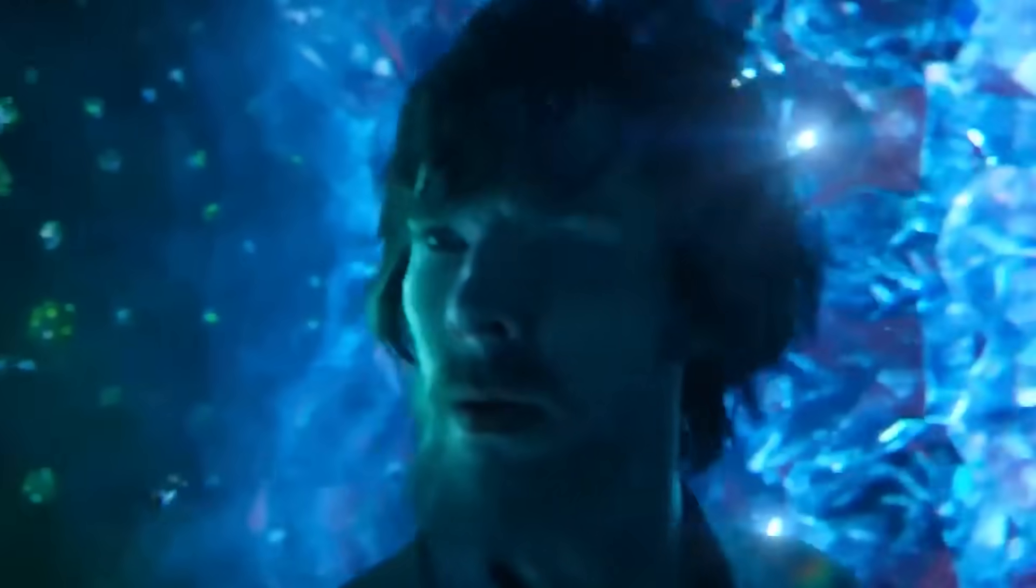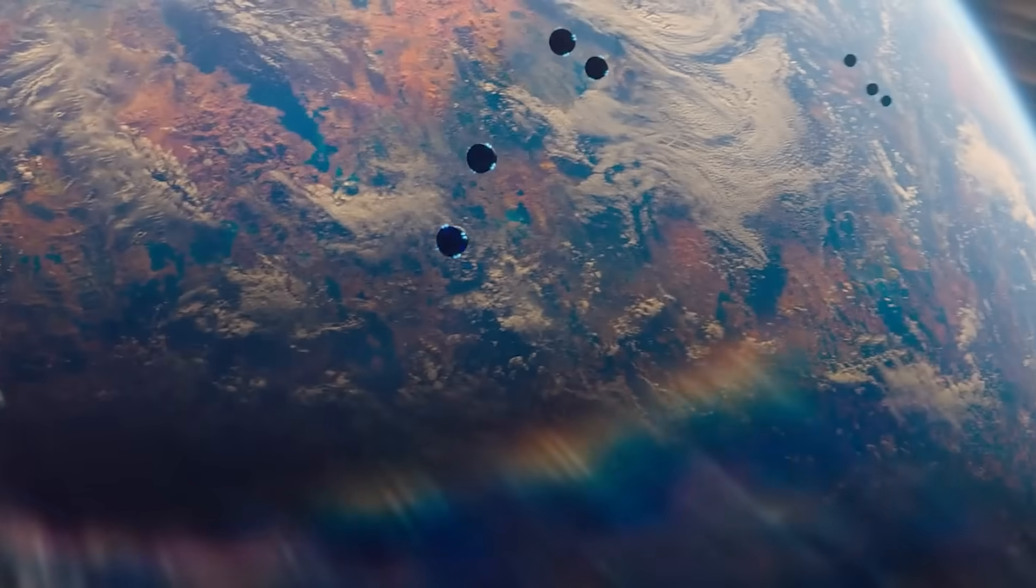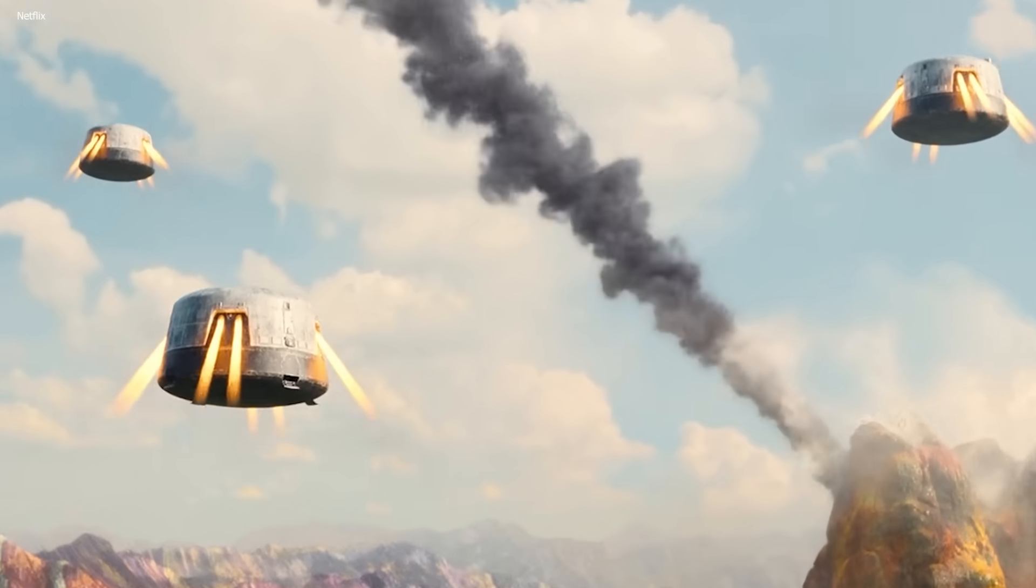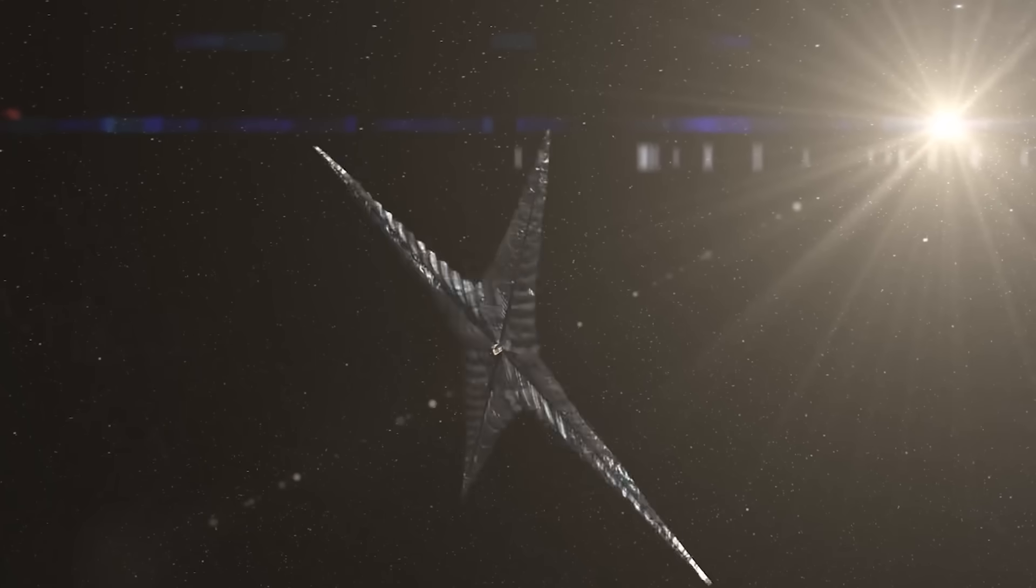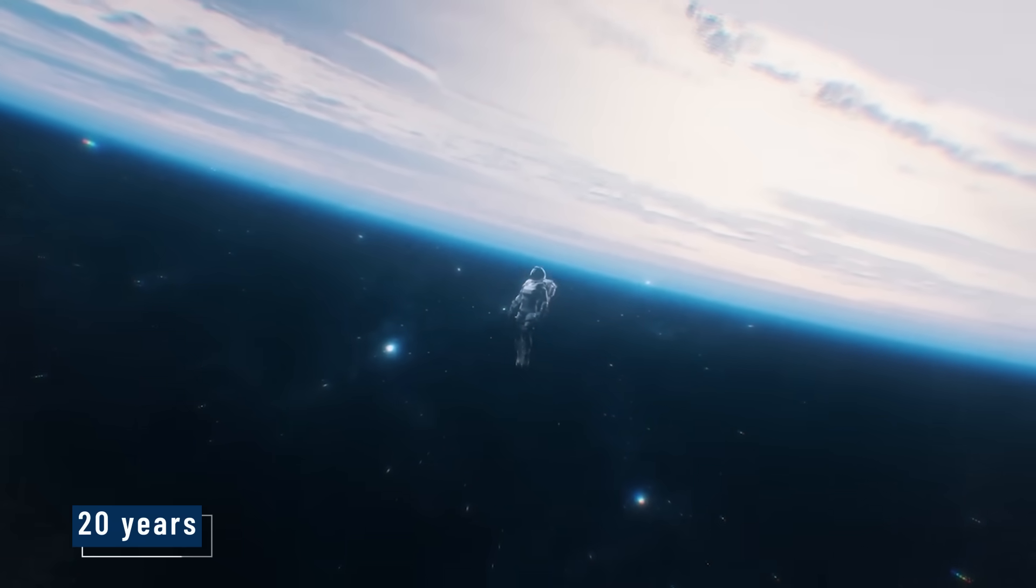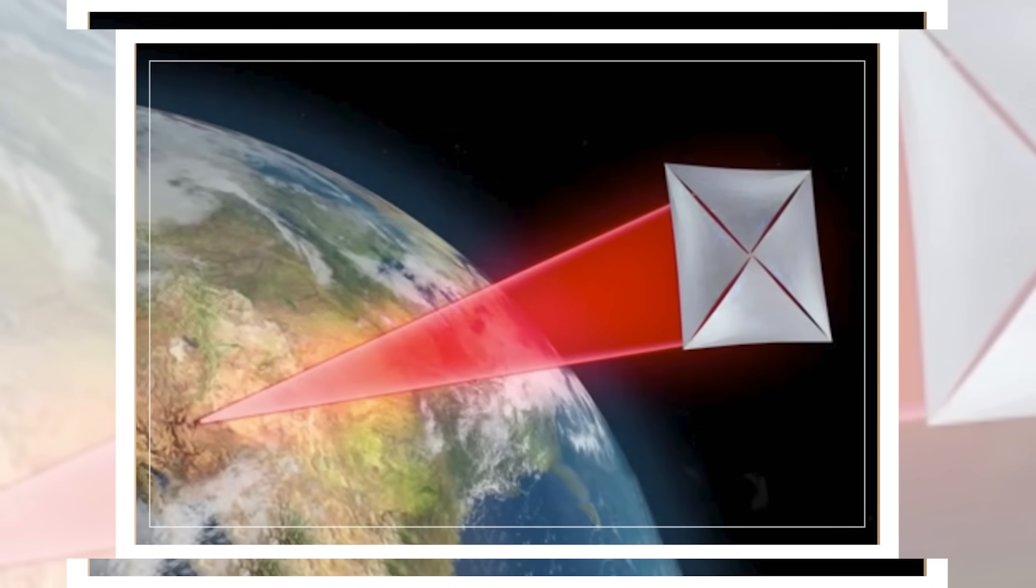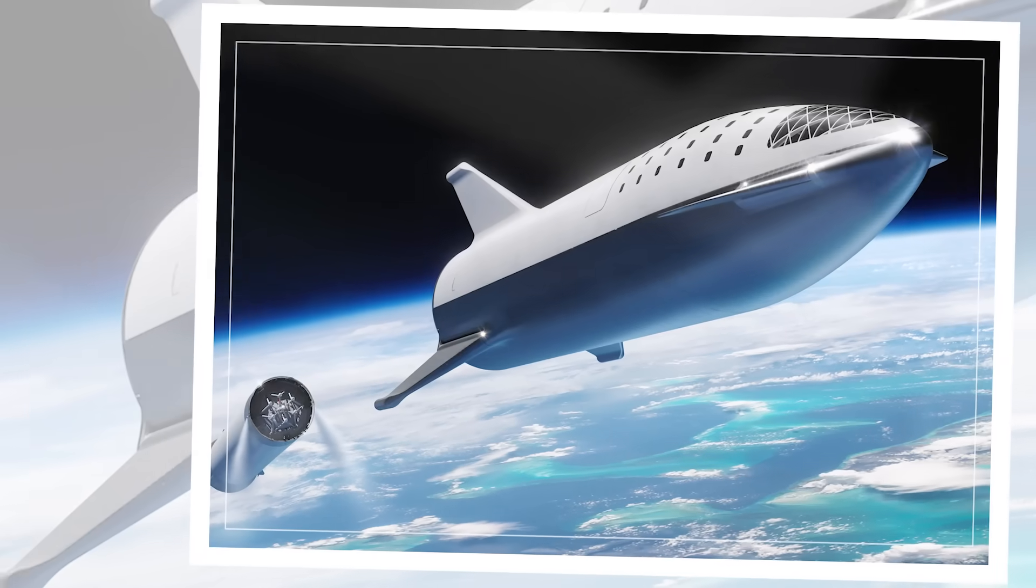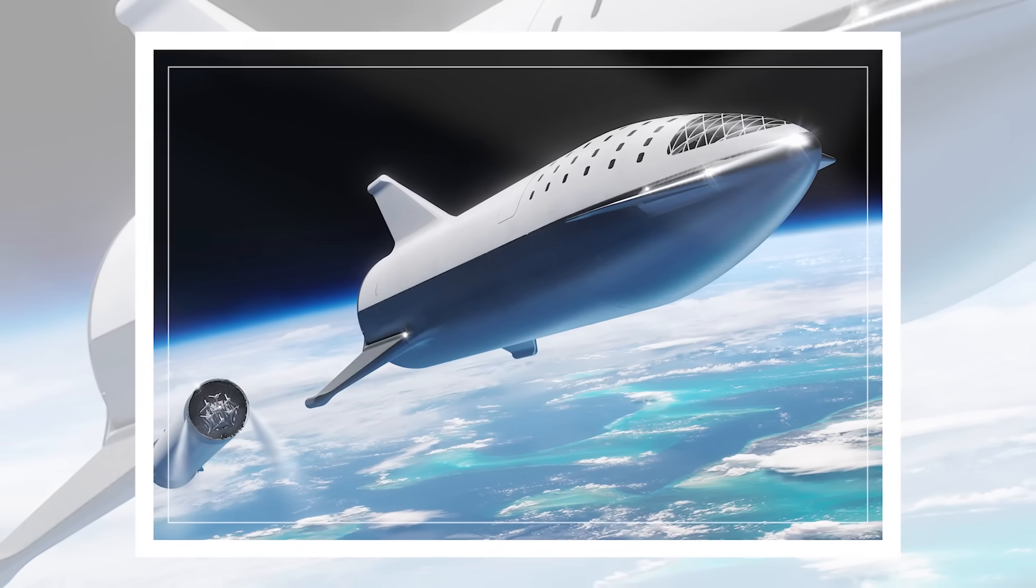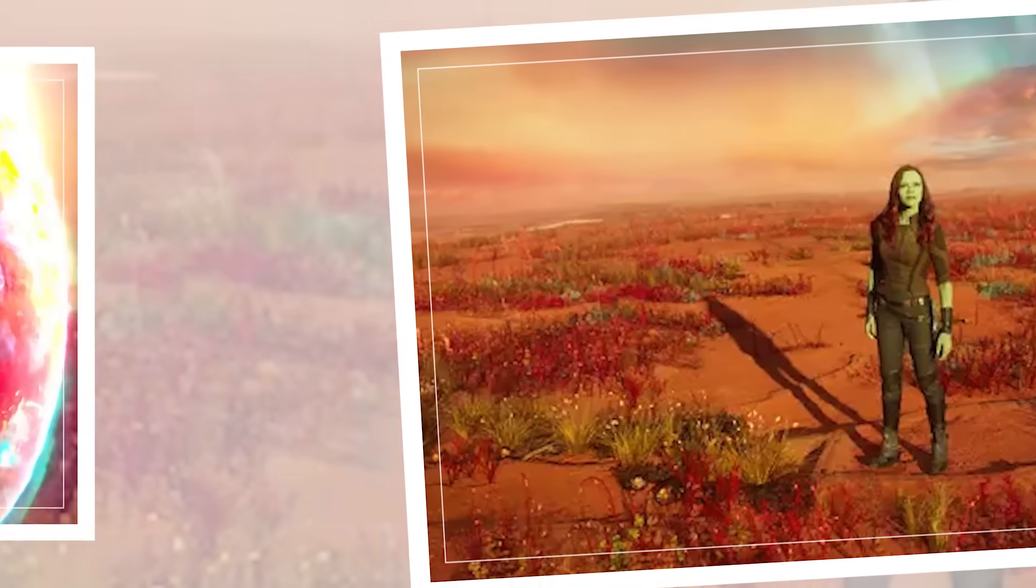Third, it fuels our dreams of visiting one day. At our current speeds, it would take 75,000 years to reach Proxima b. But new ideas, like solar sails powered by light, could shorten that to just 20 years. Projects like Breakthrough Starshot are already working on it. Fourth, this image is a reminder of how far we've come, and how far we still have to go. We used to wonder if there were other planets. Now we can see them. Maybe one day we'll stand on one.